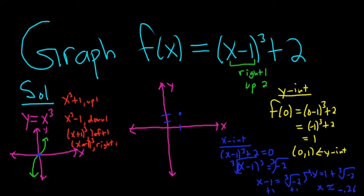So approximately negative 0.26 via a calculator. So there's one x-intercept. It's like right here. So this is negative 1. So this would be negative 1.26. It's rough. That's a rough estimate. And the y-intercept is 0, 1. So maybe it's here.